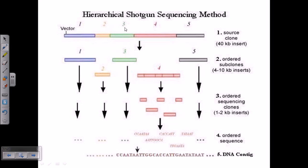Here is the process of hierarchical shotgun sequencing. The sequencing relies on simple steps. First is the source clone, a 40 KB insert. We take this source and clone it into different vectors. The vectors we utilize are either BAC or YAC, bacterial artificial chromosome or yeast artificial chromosome. We cannot use plasmid and cosmids because the insert is too large, 40 KB.